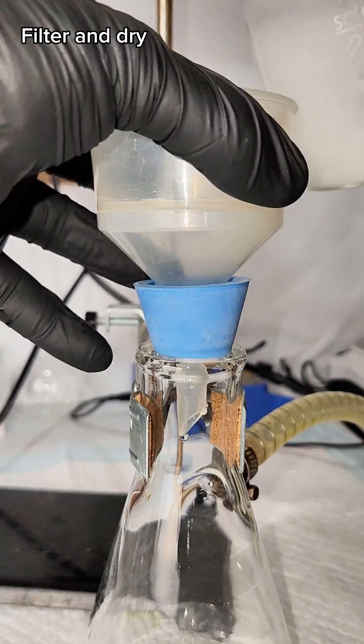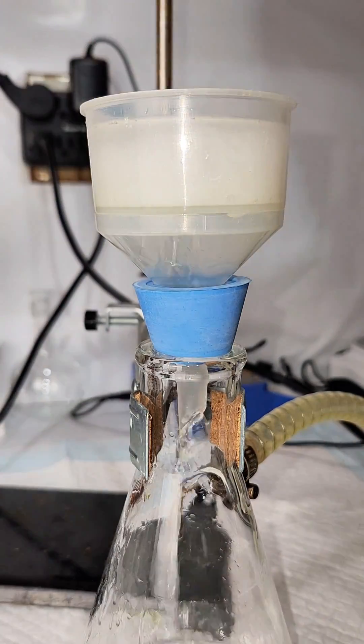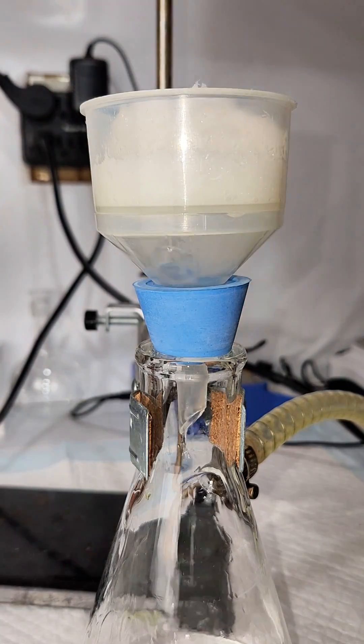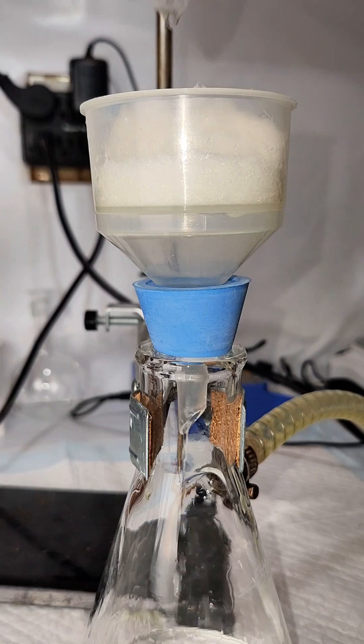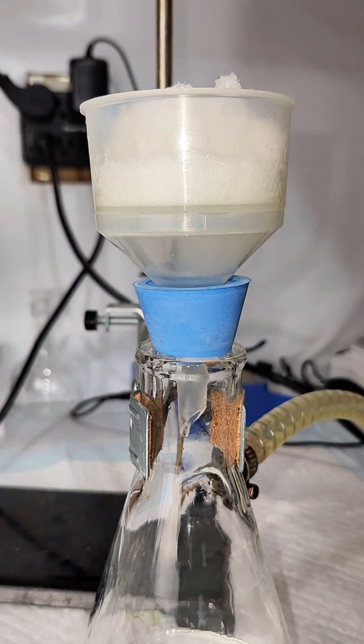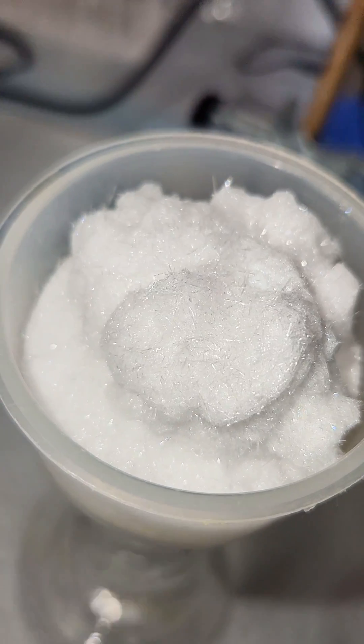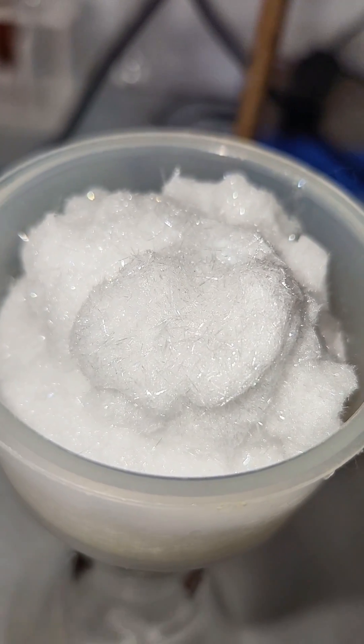Once my recrystallization is complete, I pass my product through vacuum filtration and then dry it overnight under vacuum desiccation. The final result was exactly 8 grams of these very nice looking phthalamide crystals, which represents an 81% yield.